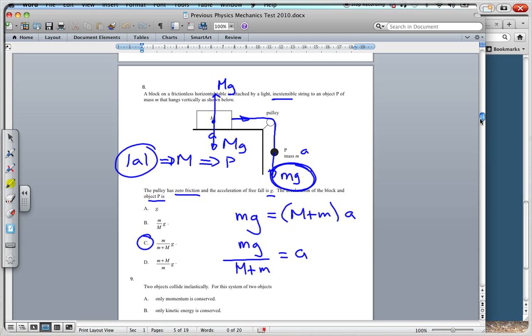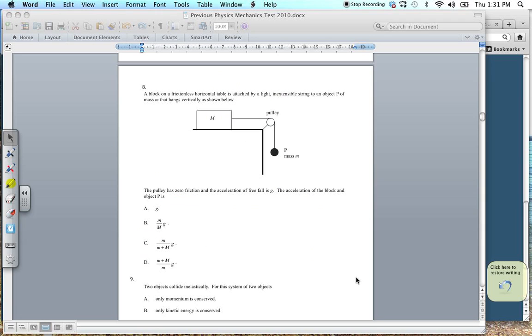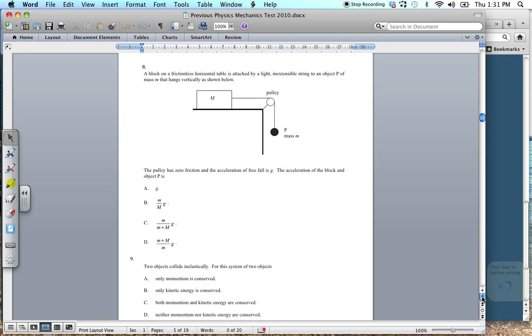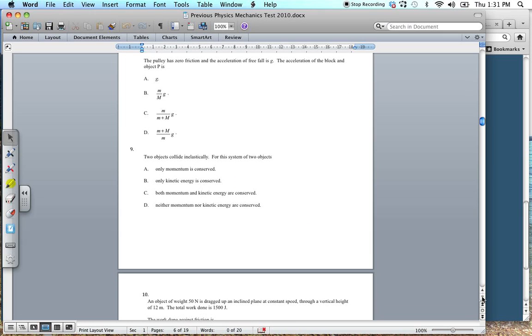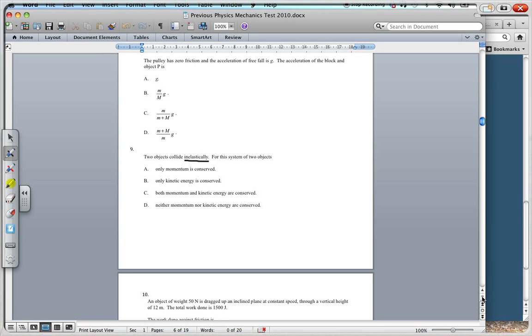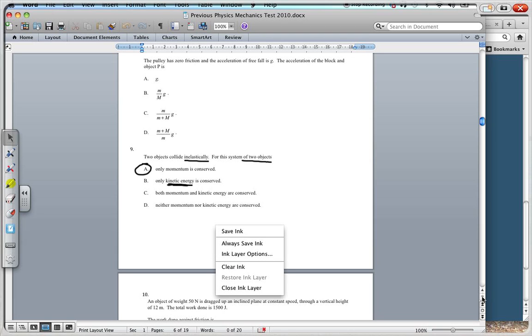Okay, going on to your next question, question 9. Question 9, going on to the next one. Two objects collide inelastically. You need to know what this means, inelastically. For this system of two objects, only the momentum is conserved. A kinetic energy, if its kinetic energy is conserved, this would be an elastic collision. So, in an inelastic collision, only momentum is conserved. You need to know that. Alright, that's 9.